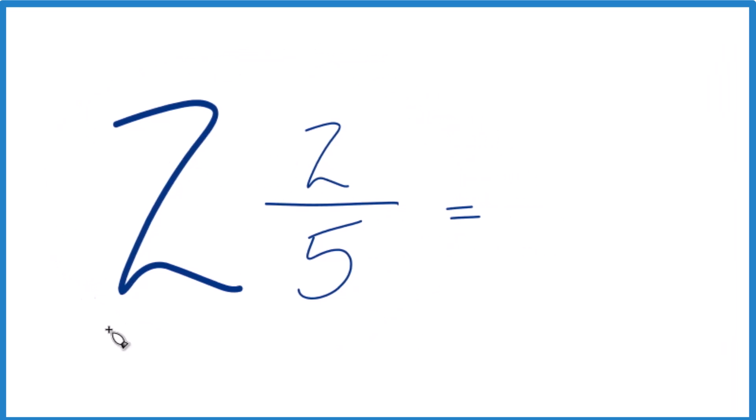First off, when we look at this, we have 2. That's a whole number, so we're just going to keep that as 2. It's this 2 fifths fraction we need to convert to a decimal.